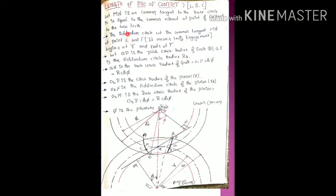The addendum circle cuts the common tangent MN at points E and F. Where the addendum circle of the gear cuts the MN tangent line, that point is called E. Similarly for the pinion, where the MN line cuts the addendum circle of the pinion, that point is called F. So E is the intersection point of MN with the gear addendum circle, and F is the intersection point with the pinion addendum circle.